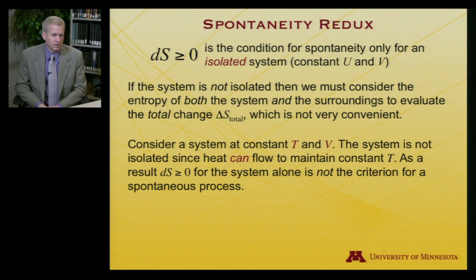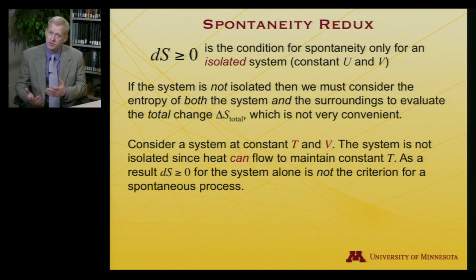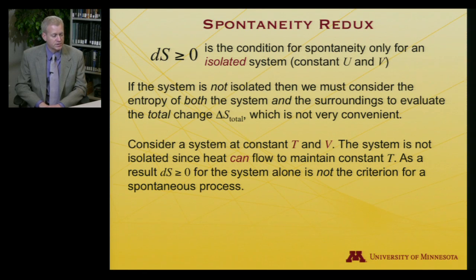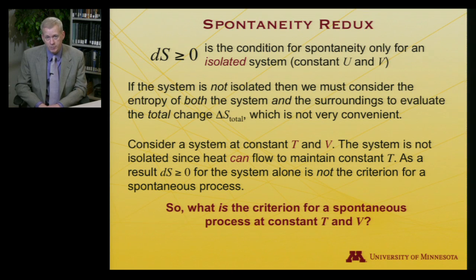So instead, let's consider a system at constant temperature and volume, rather than constant internal energy and volume. The system is no longer isolated, meaning heat can flow in or out to maintain constant temperature. As a result, the entropy change being greater than or equal to zero for the system alone is no longer the criterion for a spontaneous process. So we can ask: what is the criterion for a spontaneous process at constant T and V?